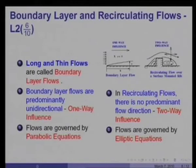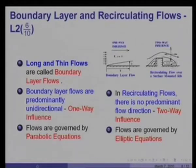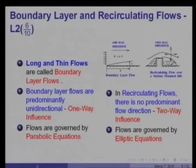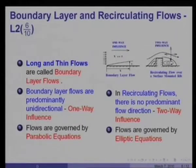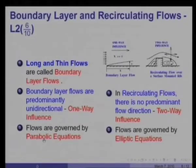Consider a surface on which a rib has been mounted. Although the predominant flow direction is along the surface, close to the wall where heat transfer takes place, you would have recirculating regions. In these regions, influences travel both from downstream as well as from upstream. Therefore, recirculating flows are called two-way influence flows. Boundary layer flows, due to their one-way influence, are governed by parabolic partial differential equations, whereas recirculating flows are governed by elliptic partial differential equations.